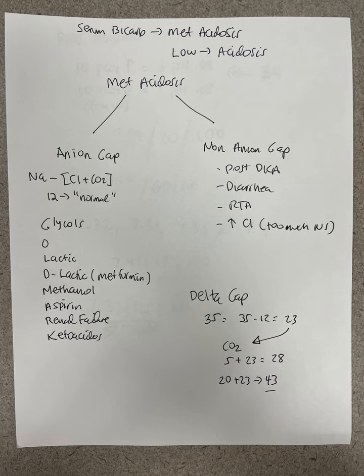The anion gap is serum sodium minus the sum of serum chloride plus bicarbonate. Some people also bring potassium into it. Typically, it's the difference between the sum of chloride and bicarb subtracted from serum sodium. A normal anion gap is typically 12, with a range.